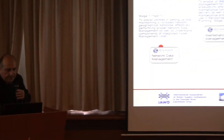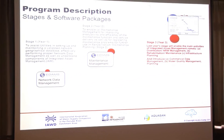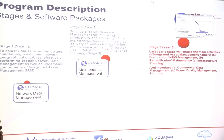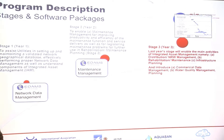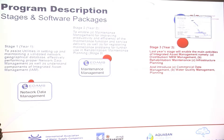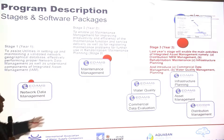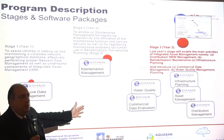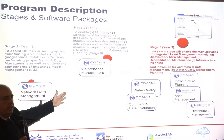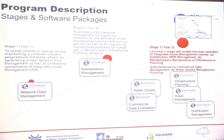So what is stage 3? Stage 3 is a combination of basically three activities: non-revenue management, distribution non-revenue management, rehabilitation maintenance, and infrastructure planning. Each one of these items is supported by specific modules — addressing non-revenue water, asset management, and distribution management.